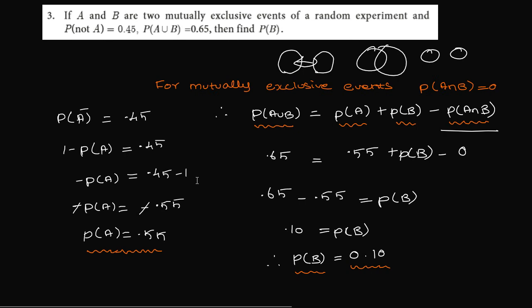Minus P(A), minus 1. So 0.45 minus 1, 1 minus 0.45, so 1 minus 0.55. Minus 0.55, so P(A) value is 0.55.